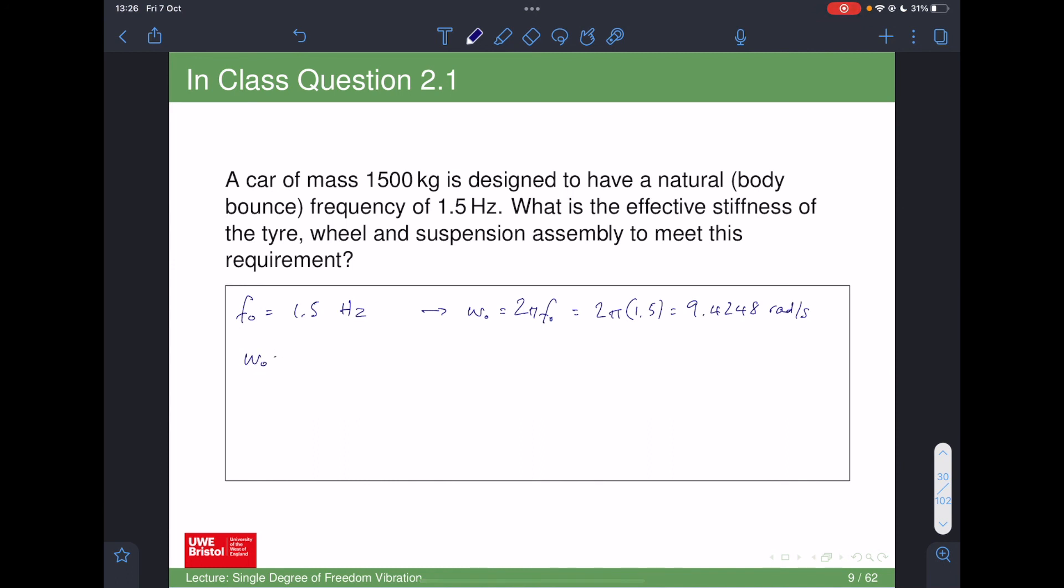We've got omega naught. We know that ωₒ = √(k/m), but we need to rearrange for k. That's going to be k = ωₒ²m. If you rearrange the equation, square both sides, then multiply both sides by m, you end up with k on one side. We know both of those things: k = (9.4248)² × 1500.